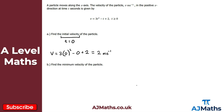For part b, we need to find the minimum velocity of the particle. To find the minimum velocity, I need where dv/dt equals zero. So I'm going to differentiate v with respect to t. dv/dt gives 6t minus 1 — the constant term differentiates to zero. The reason we differentiate is we're looking for the stationary points of the velocity-time graph. So I set dv/dt equal to zero.